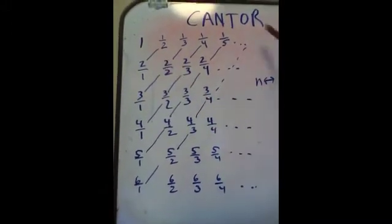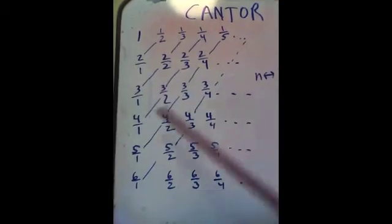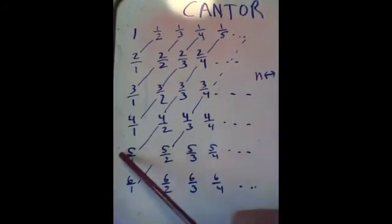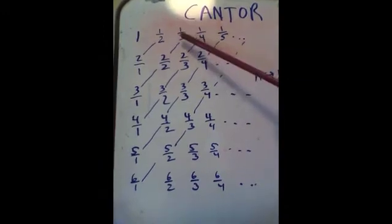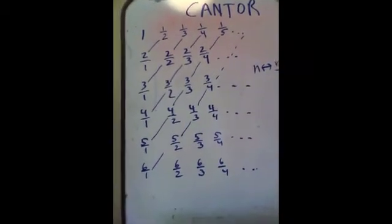You can see how every single rational number we could possibly have will be placed here more than once, in fact, because obviously 1 half is equivalent to 2 fourths, and so forth. But that's not the important point here.